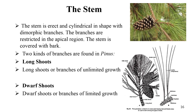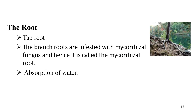The stem of conifers is erect and cylindrical in shape. There are two types of branches: long shoots and short shoots. Long shoots are branches of unlimited growth, while short shoots are of limited growth. Regarding roots, conifers have a tap root system. The tap root is a large, cylindrical, and dominant root from which other roots sprout. The roots are infested with mycorrhizal fungus and are called mycorrhizal roots. Roots absorb water and minerals from the surrounding soil.